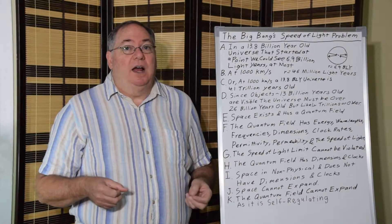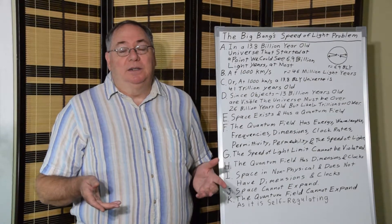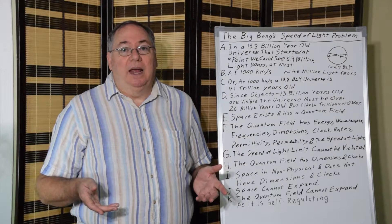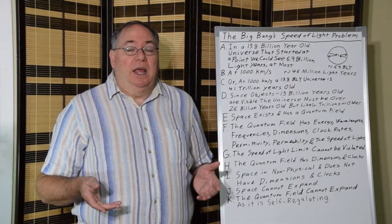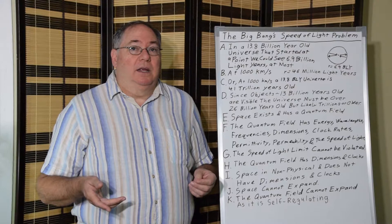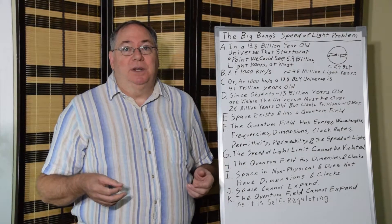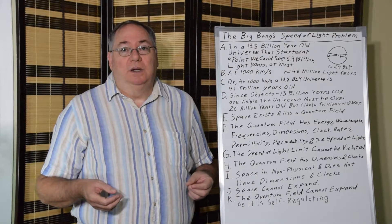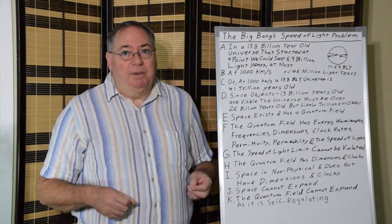In order for us to see objects nearly 13 billion light years away as we do, they would have to be, the universe would have to be over 26 billion years old. Which totally screws up the Big Bang model.